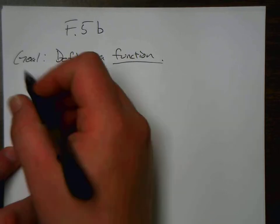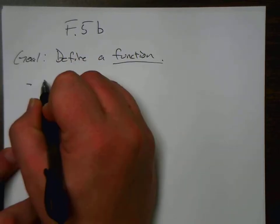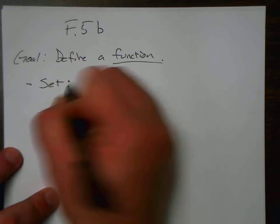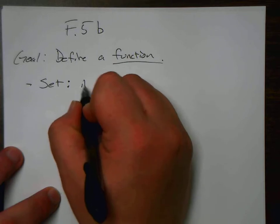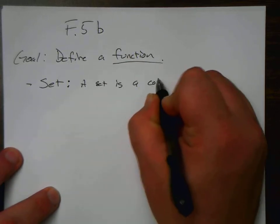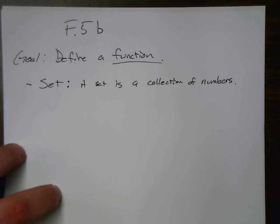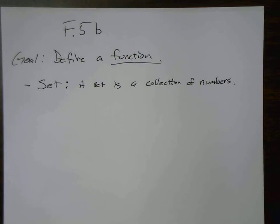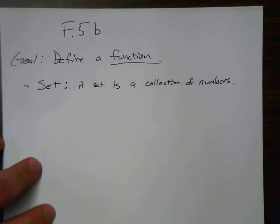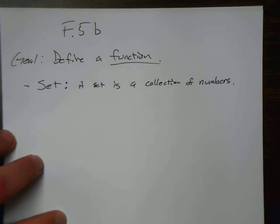Starting off, our first definition is going to be the word 'set.' A set is a collection of numbers. That's the best way to think about it — just a collection of numbers. This is going to help us with our definition of a function, because we're going to have two collections of numbers: an input collection and an output collection.